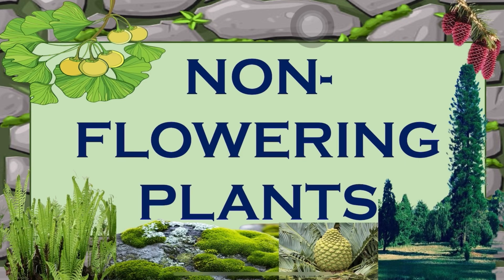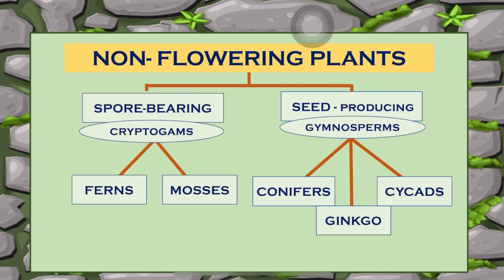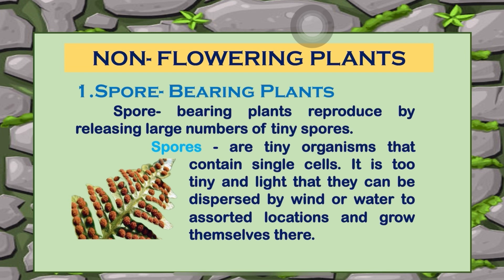Hello everyone, today we're going to talk about non-flowering plants. There are two types of non-flowering plants: spore-bearing plants, also called cryptogams, and seed-producing plants, or gymnosperms. The spore-bearing plants are ferns and mosses, and the seed-producing plants are conifers, ginkgo, and cycads.